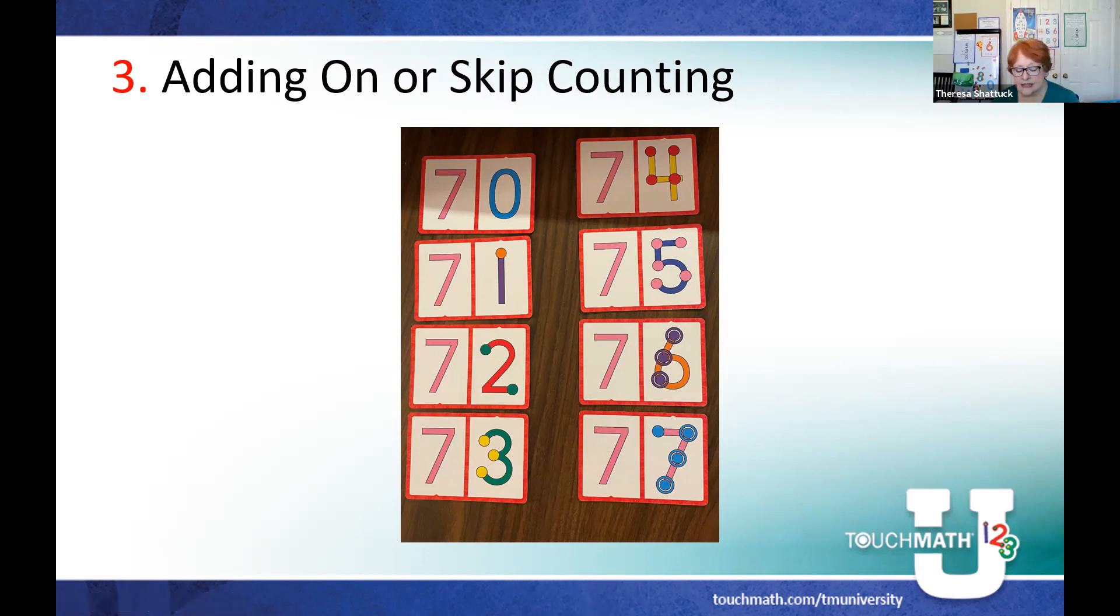Another practice could be that they work with a partner and they draw a card. That partner has to multiply, like five times two, and if they need the touch points, they do the skip counting: five, ten. So the cards can be used in more than one way.